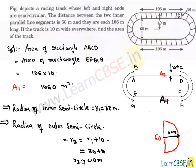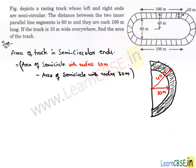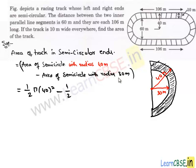So we have the radii and can easily find the area between the semicircular ends. The area of the track between the semicircular ends is obtained by removing the area of the semicircle with radius 30 from the area of the semicircle with radius 40. The area of the semicircle with radius 40 is half of π times 40 squared, and similarly the area of the semicircle with radius 30 is half of π times 30 squared.